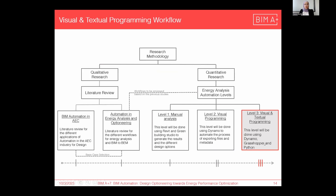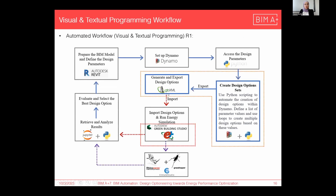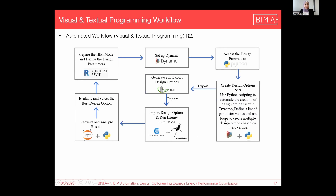Now we will move to the final automation level, which is the visual and textual programming. This is the first revision of the workflow, and after applying it we have minor changes. Due to limitations again for Dynamo, the workflow changed a bit. The final workflow has design option creation done by Dynamo with Python scripting, energy analysis done using Grasshopper and Cliamte within the Rhino environment, and data analysis done by Python scripting inside the Jupyter environment.